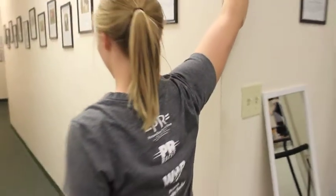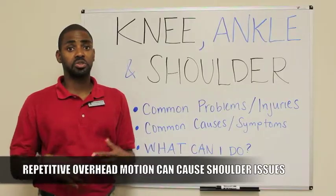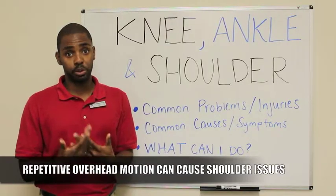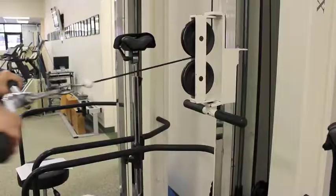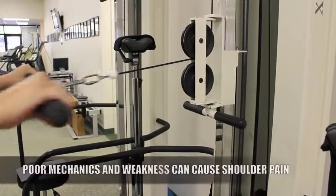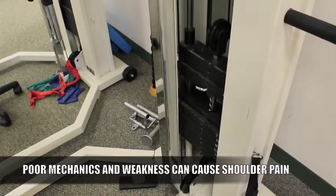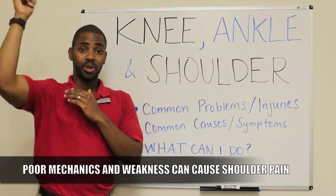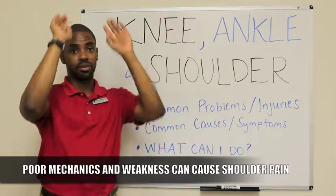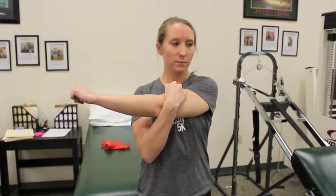Another thing I want to focus on is your shoulder. Commonly with court sports, there's a lot of repetitive overhead motion, and that leads to shoulder pain, which can commonly be attributed to poor mechanics and muscle weakness. Those poor mechanics involve the shoulder blade whenever you're hitting overhead, shooting a jump shot, or even just day-to-day activities — poor mechanics will lead to shoulder pain.